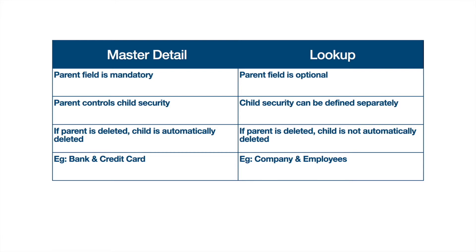The second difference is security: the security of the child will be entirely controlled by the parent in master-detail. For a profile you're logged into, if you have read and create access to the parent record, you also have read and create access on the child record — the parent controls the child's security. But for lookup, you can configure the child's security separately; it's not dependent on the parent. The third difference: if the parent is deleted, the child is automatically deleted in master-detail — all child records are deleted when the parent record is deleted.